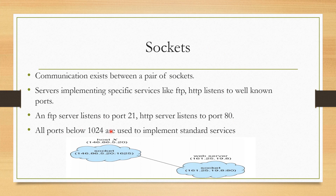All ports below 1024 are used to implement standard services. Between a web server and a client application running on a host machine, both are having bidirectional communication using a socket device. Along with the port number, the application uses specific port numbers, and the IP addresses of both the client and the server are also mentioned. Only then is the socket communication completed.